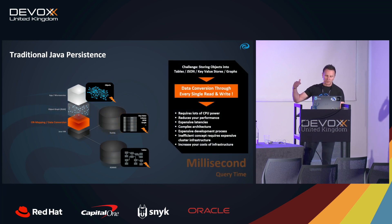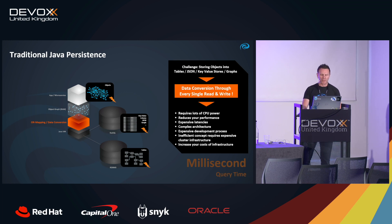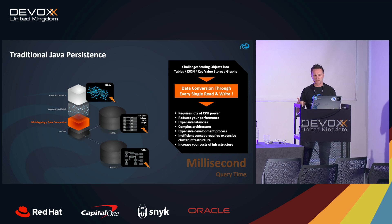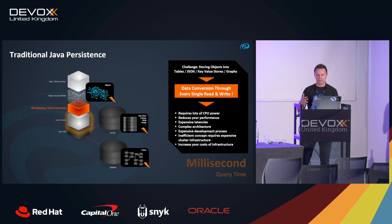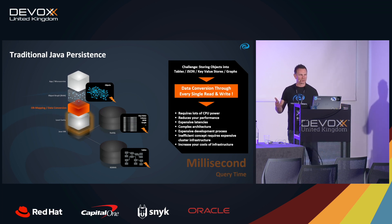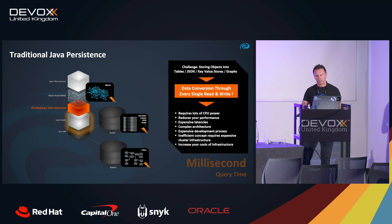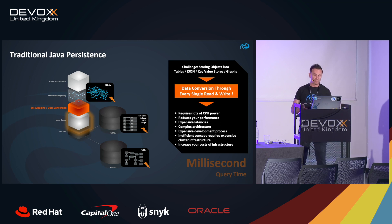Data conversion or mapping always takes lots of computing time behind the scenes, creating delays. To accelerate this process, developers are used to using local caches, making the architecture more and more complex. That's why we want to actually store Java objects directly into a data storage.